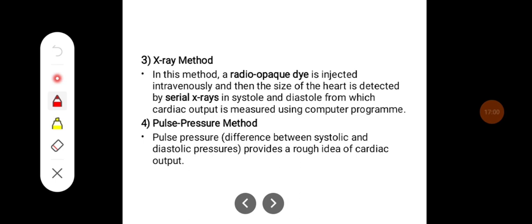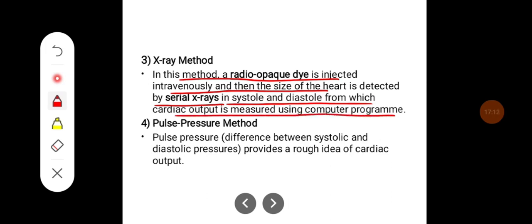In the x-ray method, a radio-opaque dye is injected intravenously and the size of the heart is detected by serial x-rays in systole and diastole, from which cardiac output is measured using a computer program. The pulse pressure method uses the difference between systolic and diastolic pressures to provide a rough estimate of cardiac output.